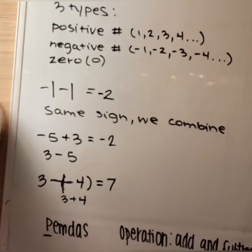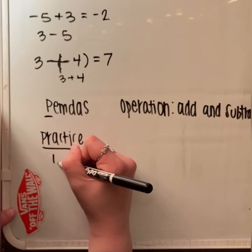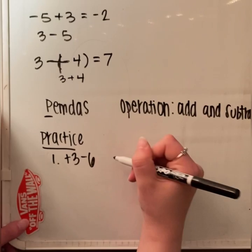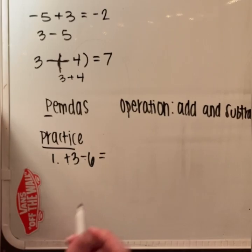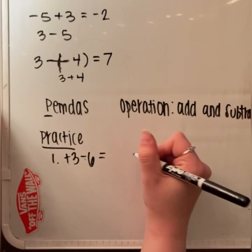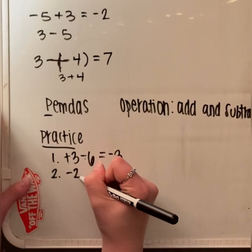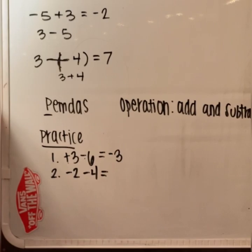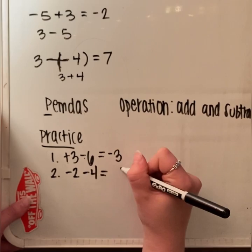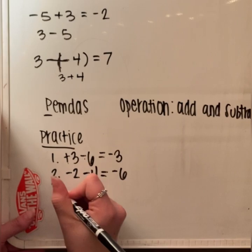Number 1: positive 3 minus 6. We see a positive sign and a negative sign. We have more value on the negative side, so the difference between 3 and 6 is 3, and there's a negative at the front of the 6 — so the answer is negative 3. Number 2: negative 2 minus 4. We see the same sign, so we combine. 2 and 4 is 6, and they both have negatives at the front — so negative 6.